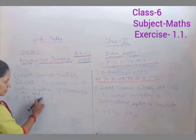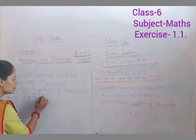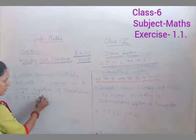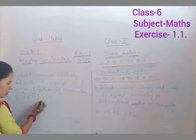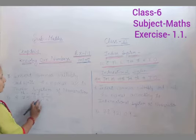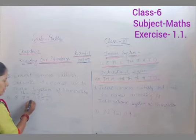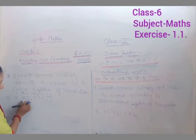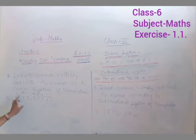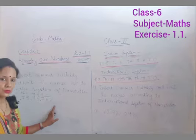And we know that jo commas hote hai, woh family ke according apply hote. Isse ones family bana jata hai. That means comma yahan apply hoga. Uske baad ye thousand family hai, comma yahan apply hoga. And this is lakh family, comma yahan apply hoga. And hum ise kaise read karenge? Eight crore 75 lakh, 95,762.